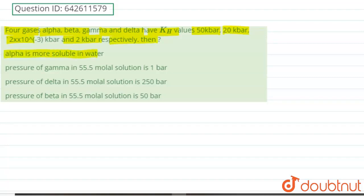Then first option says alpha is more soluble in water. Second option is pressure of gamma in 55.5 molar solution is 1 bar. Third is pressure of delta in 55.5 molar solution is 250 bar. Fourth is pressure of beta in 55.5 molar solution is 50 bar.